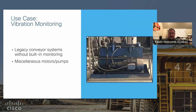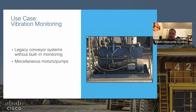Vibration monitoring is another good use case. Many legacy conveyor systems and miscellaneous pumps and motors don't have built-in vibration monitoring. You can have a smart vibration sensor that periodically takes measurements and reports them back, enabling preventative maintenance — knowing a failure is going to happen before it actually happens and impacts production.